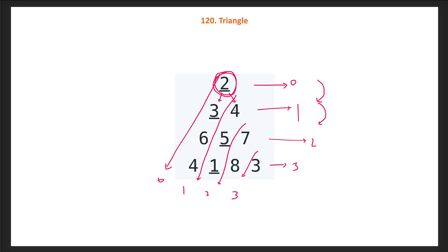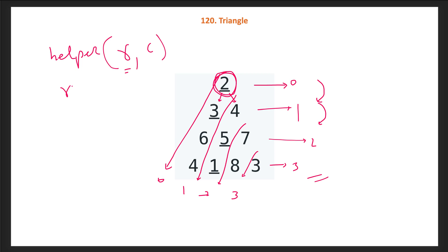How will we solve this problem? First we will form the recursive solution. If you've already solved some famous DP problems, it's straightforward to come up with the recursion. We call a recursive function helper that takes the row number and column number as input. The base case is: if r is greater than or equal to the total number of rows R in our triangle, we return 0, because we've found the path from top to bottom.